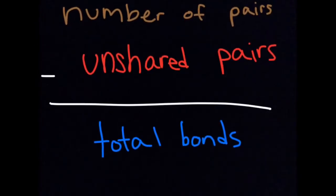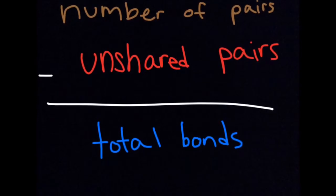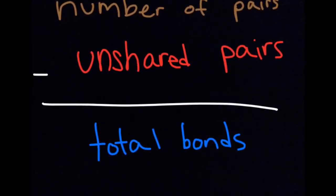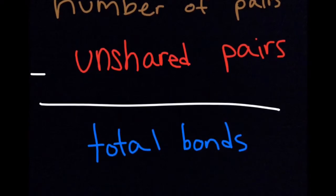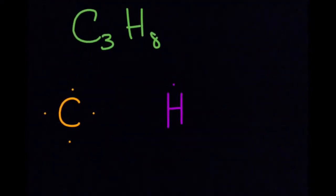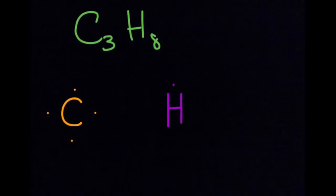Once you get the number of pairs, you're going to subtract that by the number of unshared pairs in your molecules, and by that you are going to get the total bonds for your Lewis dot structure. First, I'm going to help you figure out C3H8, aka propane.